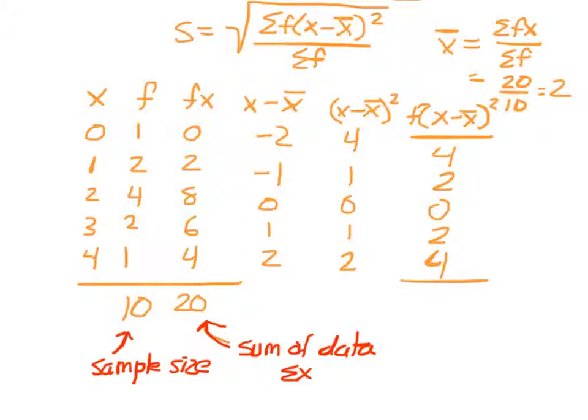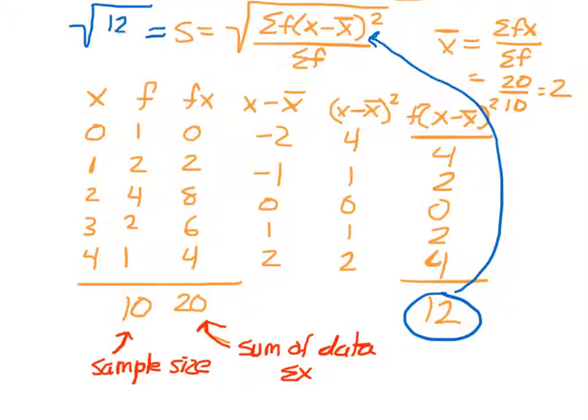The last column is to multiply the square of the deviations by the frequencies. Once we have this column we can find the sum which is 12, and this number becomes the numerator of our new standard deviation equation. So we have the square root of 12 over the sum of the frequencies, which we know from previous work is 10, and therefore I can approximate the standard deviation at 1.10.